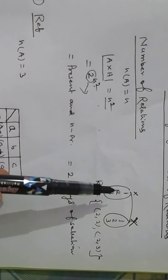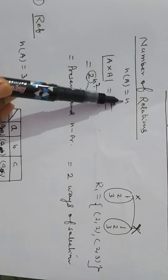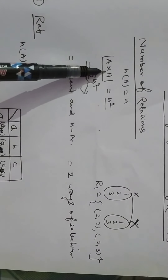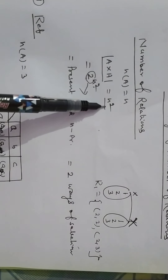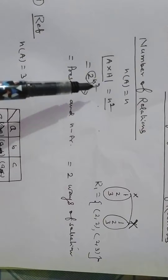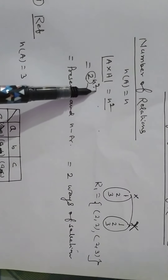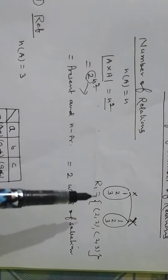So now, suppose in set A there are N elements, then the Cartesian product of A with A has N squared elements. So the number of total relations will be 2 to the power N squared.